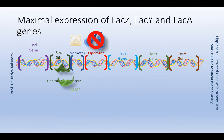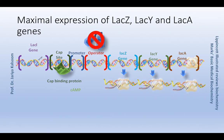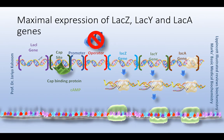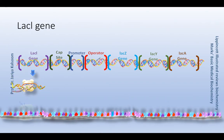The lacZ, lacY, and lacA genes are maximally expressed when the repressor protein is not attached to the operator — the operator site is empty — and cyclic AMP is bound to the CAP site along with the CAP binding protein. The repressor protein is a trans-acting element coded by the lacI gene, which is not part of the lac operon. It is a constitutive or housekeeping gene.